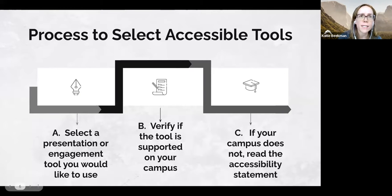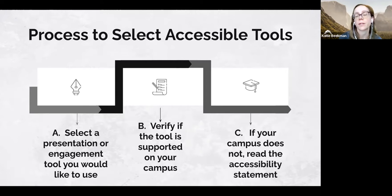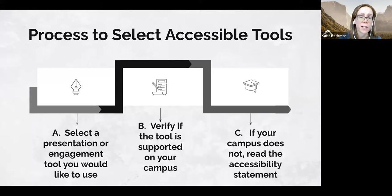General steps for acquiring accessible technology tools: first, select a tool you want to use, verify if it's already supported on your campus, and if not, review the product's accessibility information. The purpose is to identify specific accessibility issues, determine if more accessible products are available that would fulfill the same purpose, and if not, create equivalent alternative assignment options for students who might be unable to use the tool.